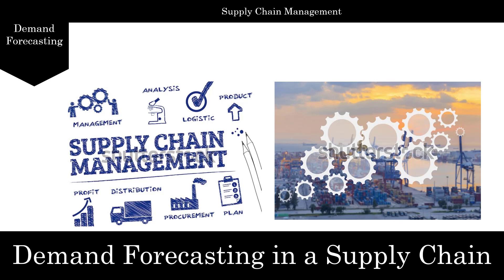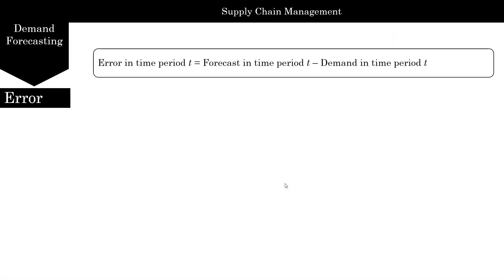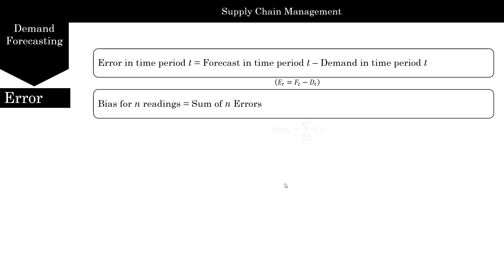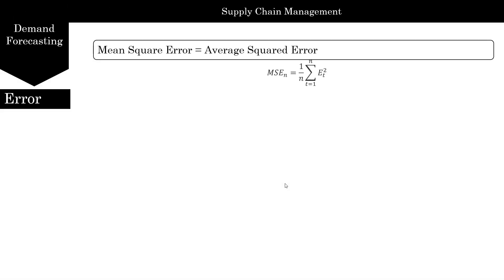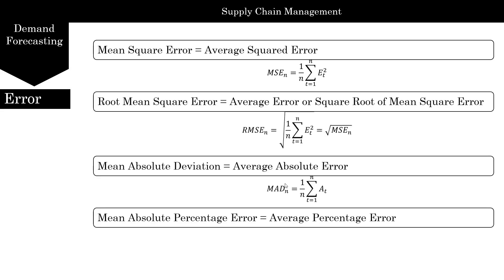Welcome to supply chain management. In this lecture we're going to continue with demand forecasting. Before we get into all the different methods, we need to know how to visualize the data and how to calculate different kinds of errors, the confidence interval, and what these mean. In the last lecture you've already gone through these terms: error in time period, forecast minus demand, bias, absolute error, tracking signal, mean squared error, root mean squared error, mean absolute deviation, and mean absolute percentage error. Now we're going to focus on how to calculate these in Excel.